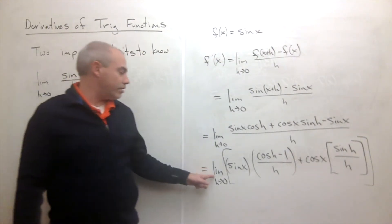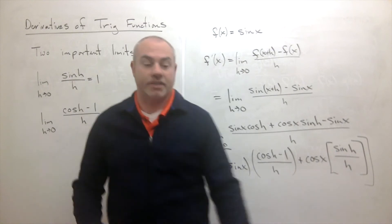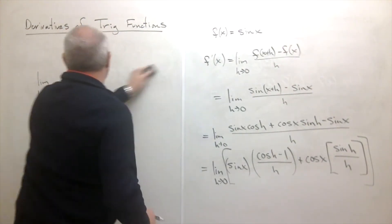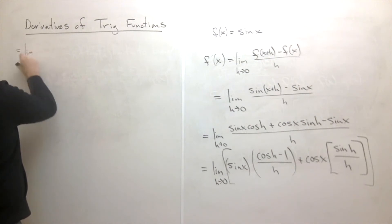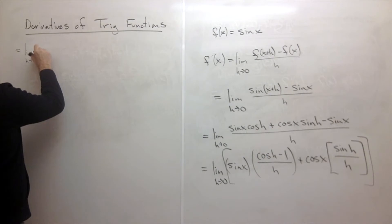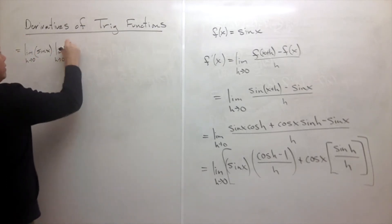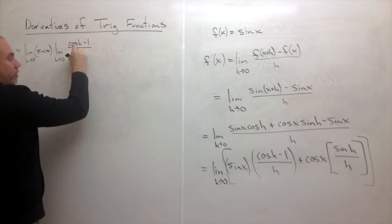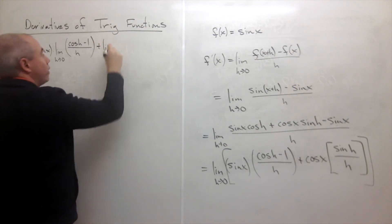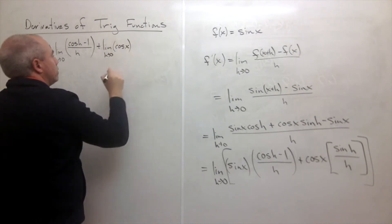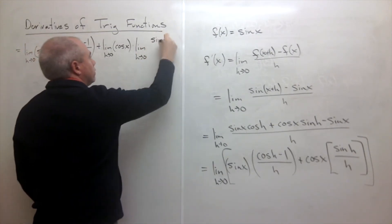Now we can distribute the limit across the sum and products, rewriting this as: the limit as h goes to zero of sine of x, times the limit as h goes to zero of cosine of h minus one over h, plus the limit as h goes to zero of cosine of x, times the limit as h goes to zero of sine of h over h.